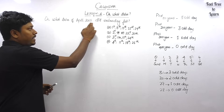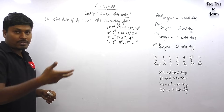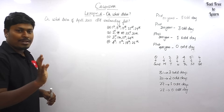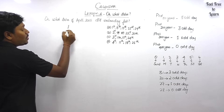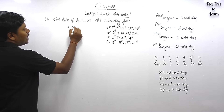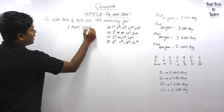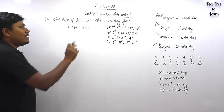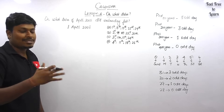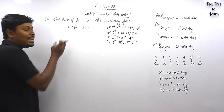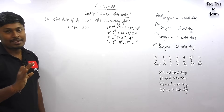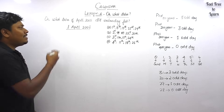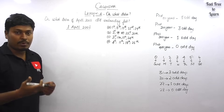Question one: on what dates of April 2001 did Wednesday fall? Our target is to find all the days in April 2001 where Wednesday falls. We can find what was the first day of April 2001 — whether it is Monday, Tuesday, or Wednesday. If we find the first day of the week for April, it is very easy to find the answer. This is very similar to lessons two and three.